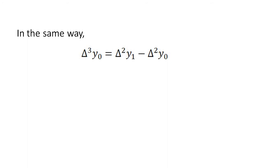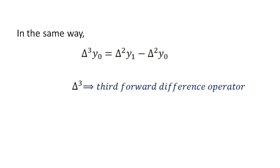Similarly, Δ³y₀ is the difference between Δ²y values, which equals Δ²y1 − Δ²y0. Δ³ is called the third forward difference operator.